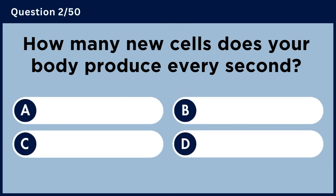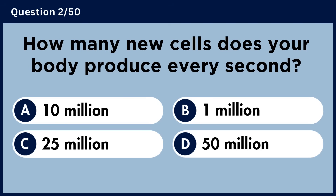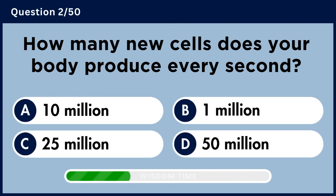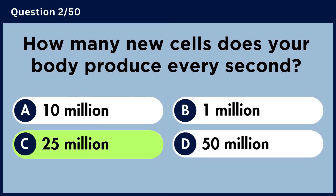How many new cells does your body produce every second? Answer C: 25 million.